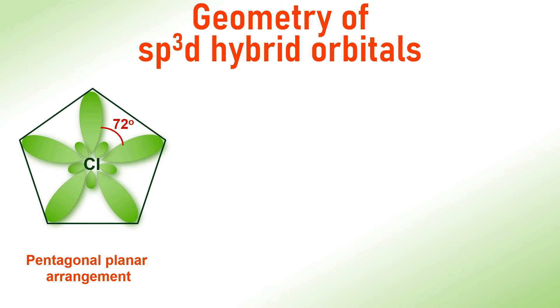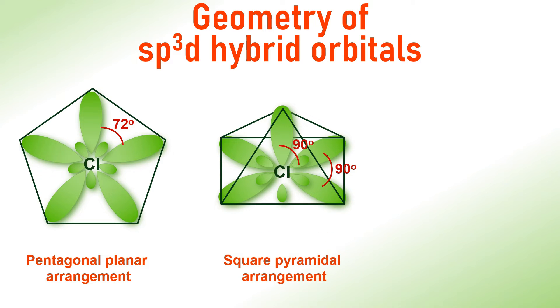The first one is pentagonal planar geometry. Here, each sp3d orbital makes 72 degrees of angle with the other orbitals. And the second one is square pyramidal arrangement. Here, four orbitals are arranged in a square plane while the fifth one projects above this plane, resulting in 90 degrees of angles with each other.